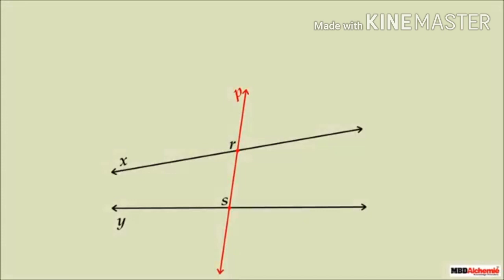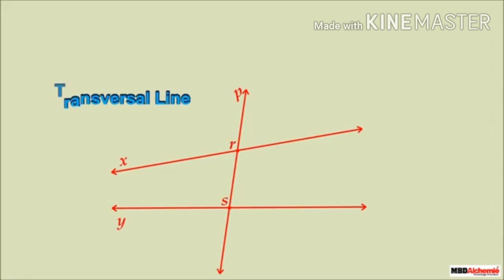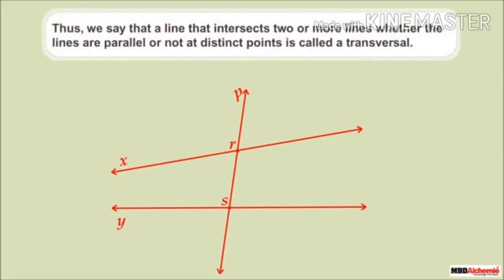If line P intersects two non-parallel lines X and Y at two distinct points R and S, would it still be correct to say that line P represents a transversal? Yes, because it is not important whether the lines are parallel or non-parallel. Thus, a line that intersects two or more lines — whether parallel or not — at distinct points is called a transversal.